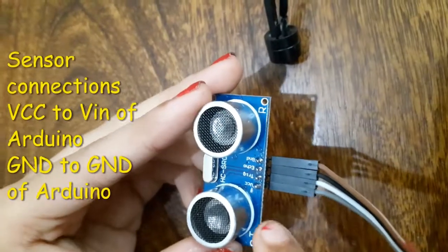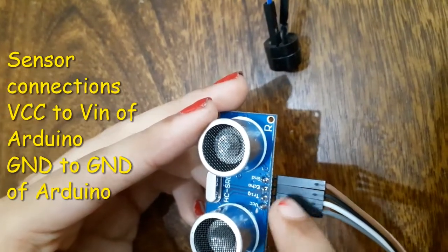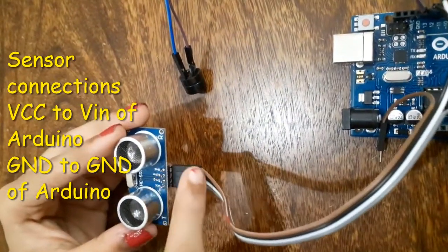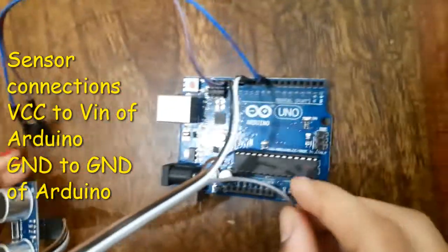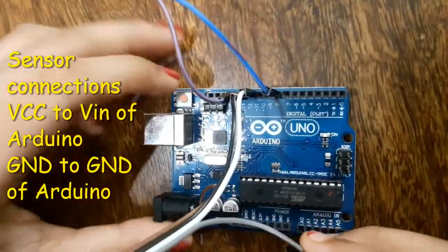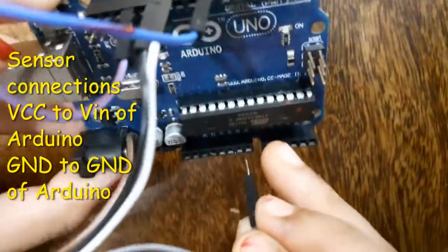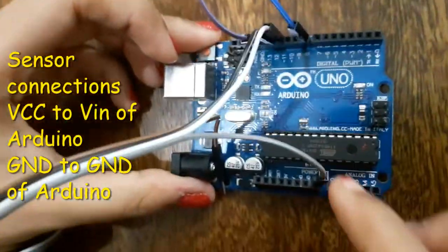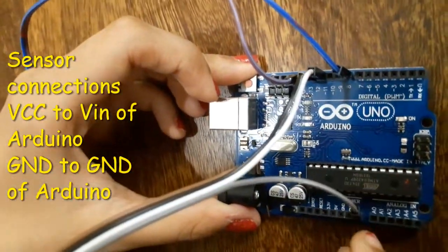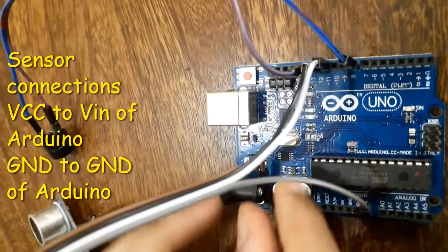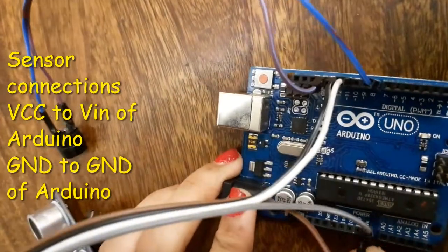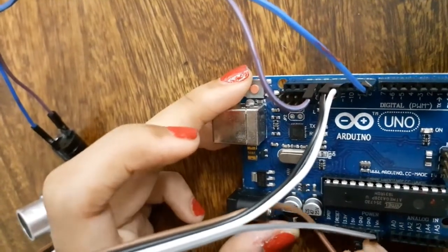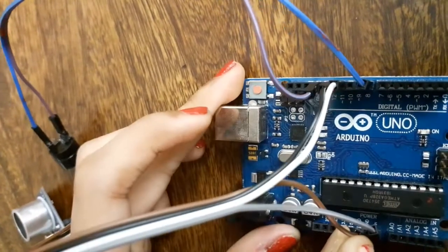Now I have to connect VCC and ground. VCC which is grey in color and ground which is brown. The VCC has to be connected to VIN. From the gap, it is the first one. And brown which is ground has to be connected to ground. After VCC, it is ground, so I connect it there.